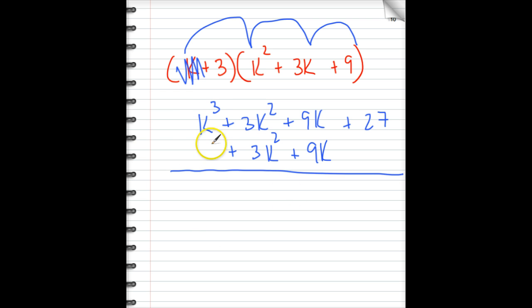Now, everything's aligned by powers. The cubes, the squares, the first power, and the constant. So now, I have k³ plus 3k² and three more k² is 6k². 9k and 9k, 18k. And bring down the positive 27. And that is a wrap. This one is all set.